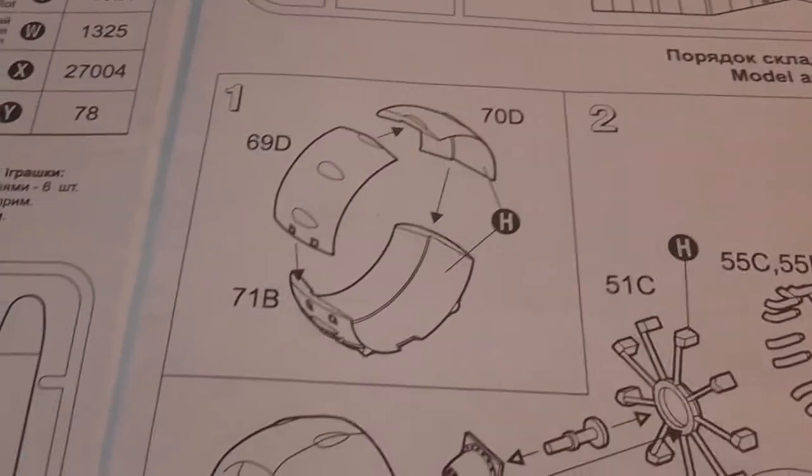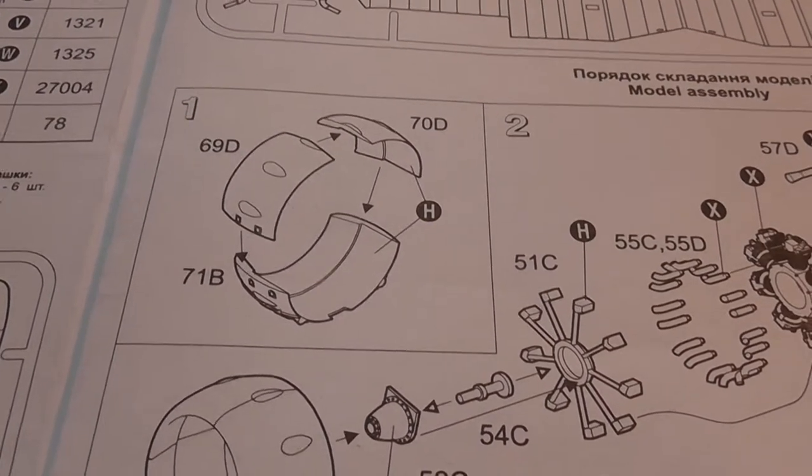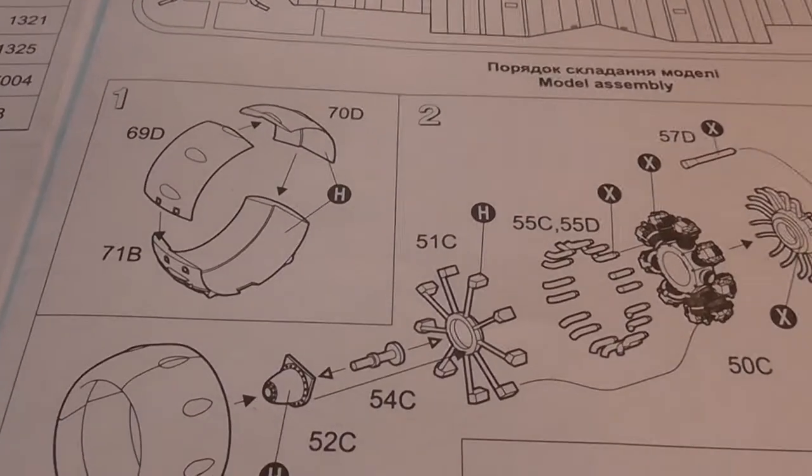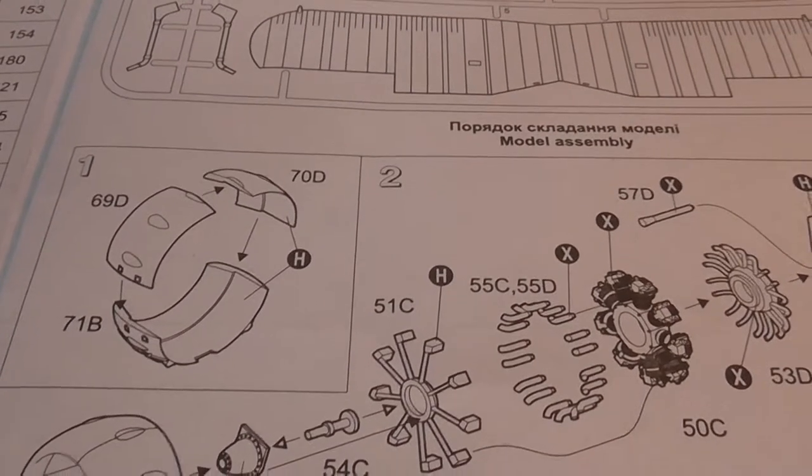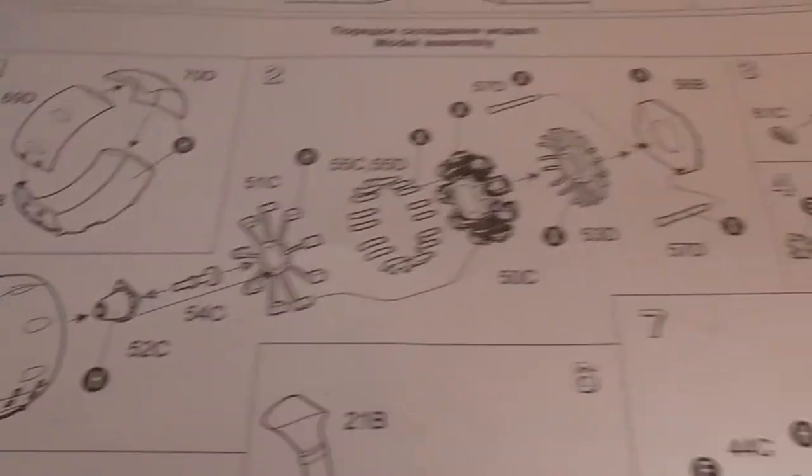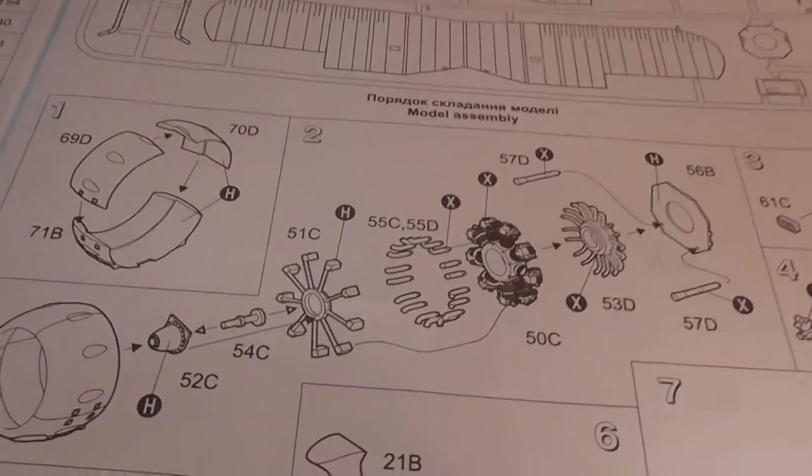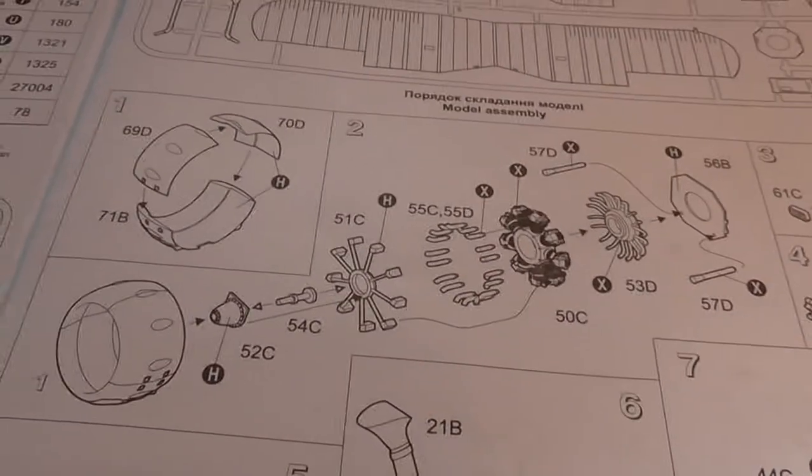The first instruction shows the engine cowl being built, just three parts put together. Don't know yet if they need filler, might do, might not. Then they get painted and added to the rest of the engine. Some might be scared by that, but take your time, be easy.